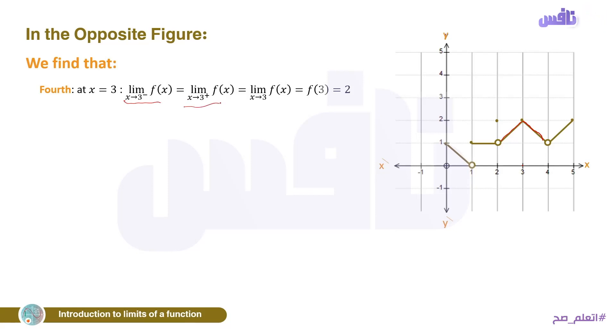Third case: at x = 2 — from the left, f(x) approaches 1; from the right, f(x) also approaches 1. Both right and left limits equal 1, so the limit as x tends to 2 of f(x) equals 1.